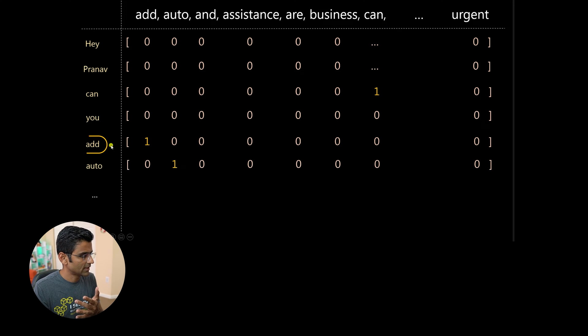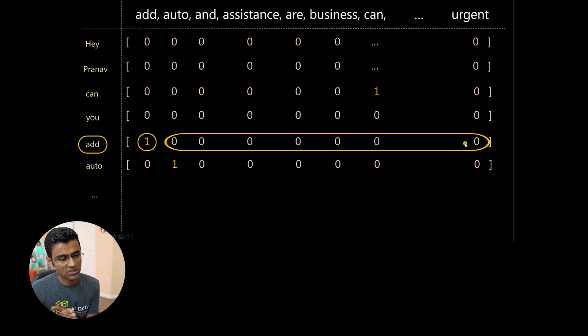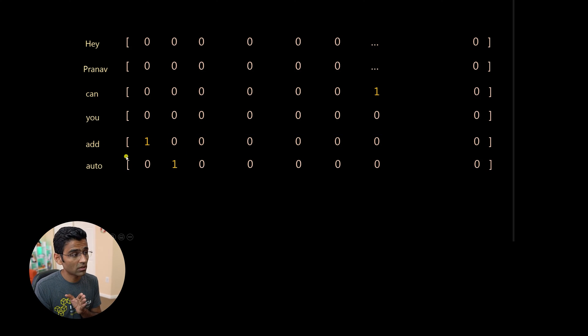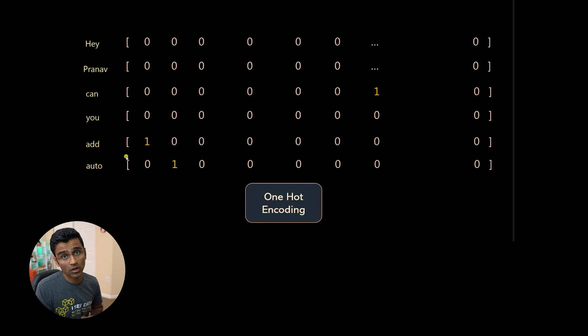See here, add. So if you have a word add, the position for add is the first position. That will be 1. The remaining position is 0. And this is called one hot encoding.